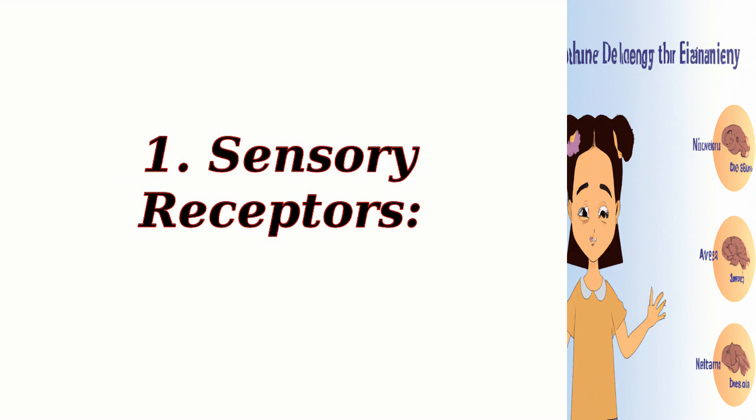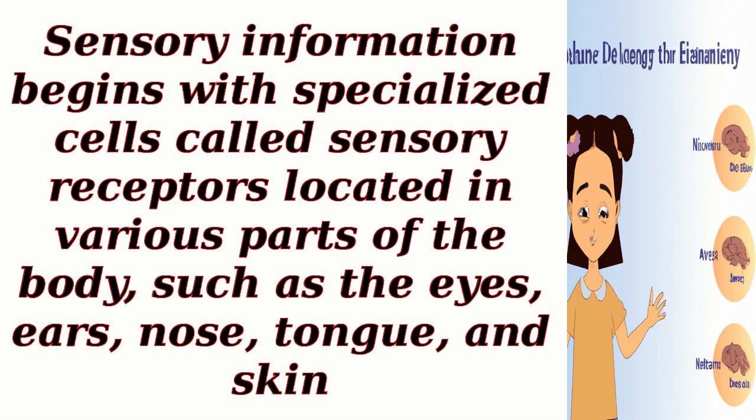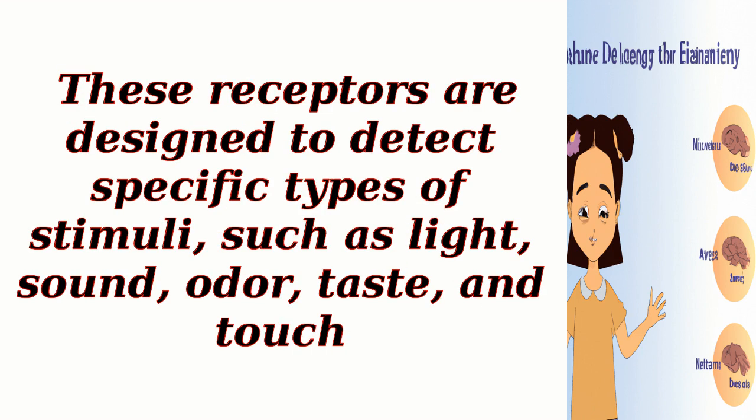1. Sensory Receptors. Sensory information begins with specialized cells called sensory receptors, located in various parts of the body such as the eyes, ears, nose, tongue, and skin. These receptors are designed to detect specific types of stimuli, such as light, sound, odor, taste, and touch.